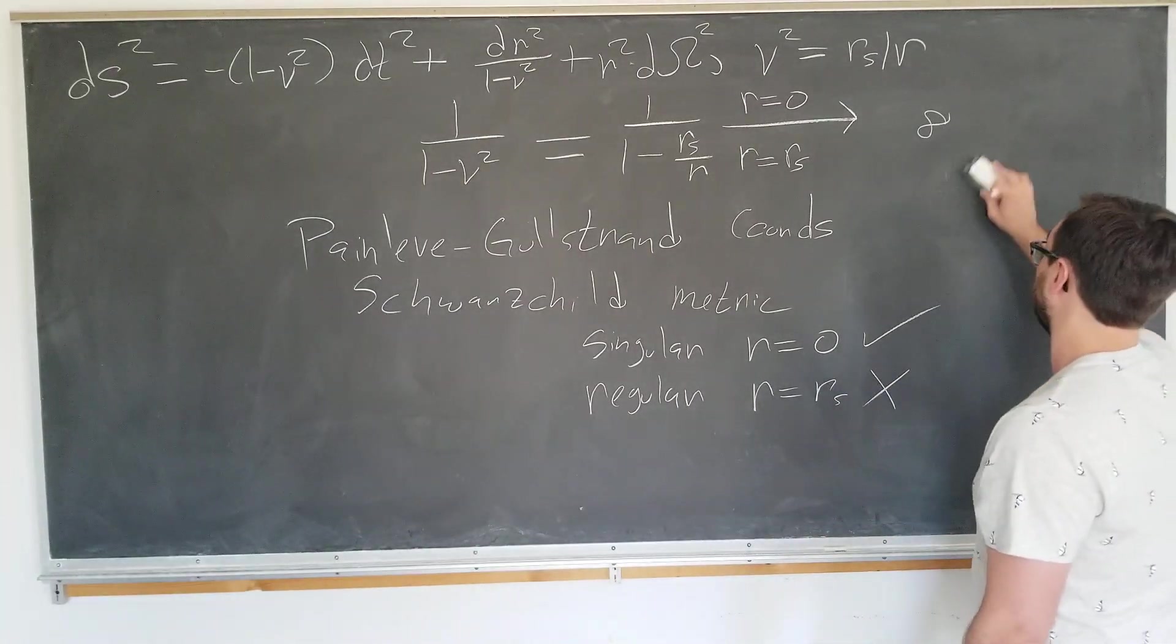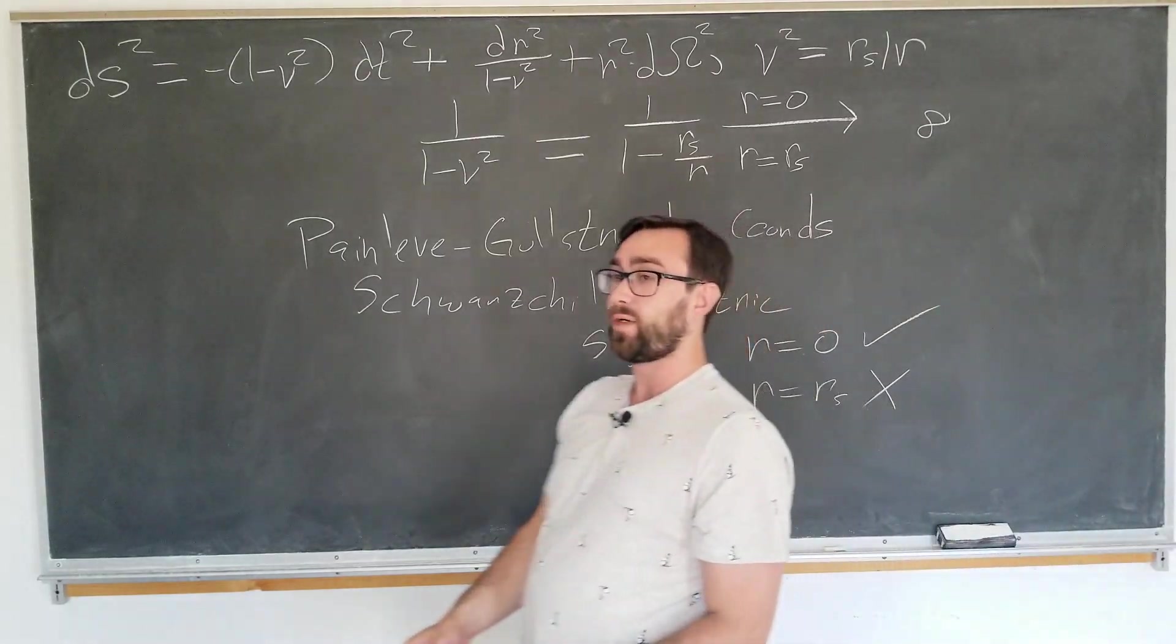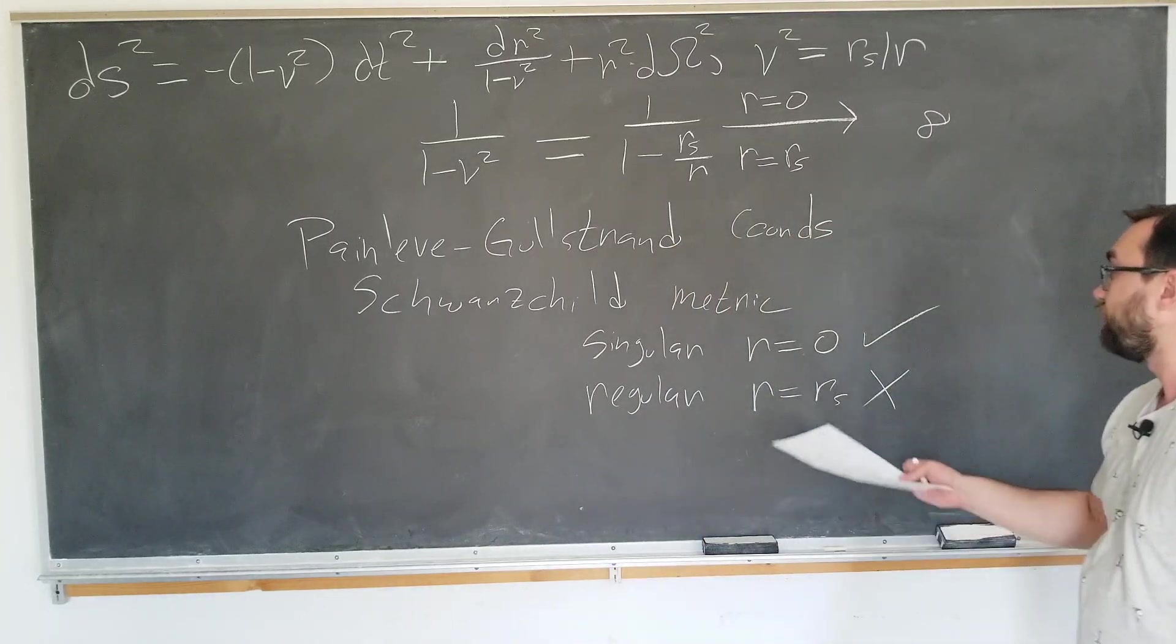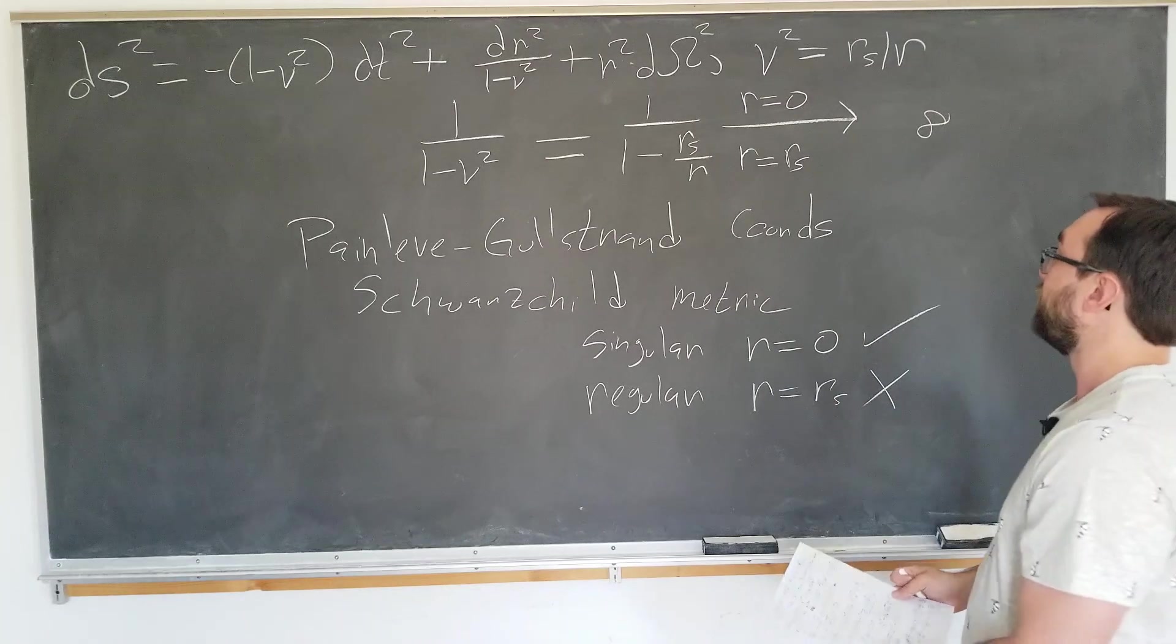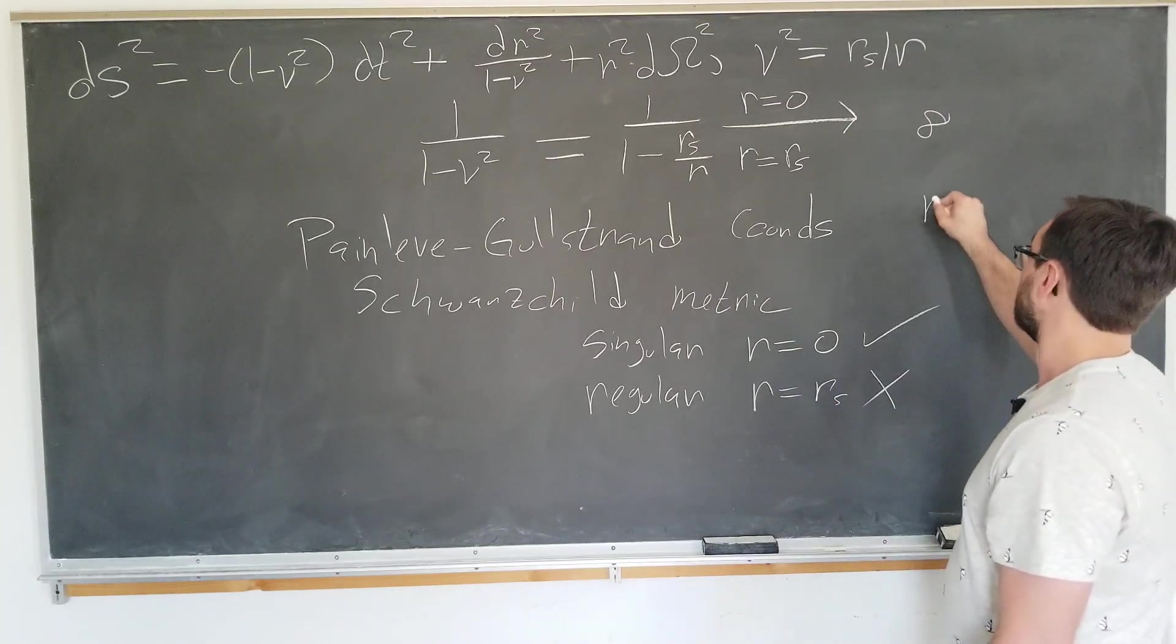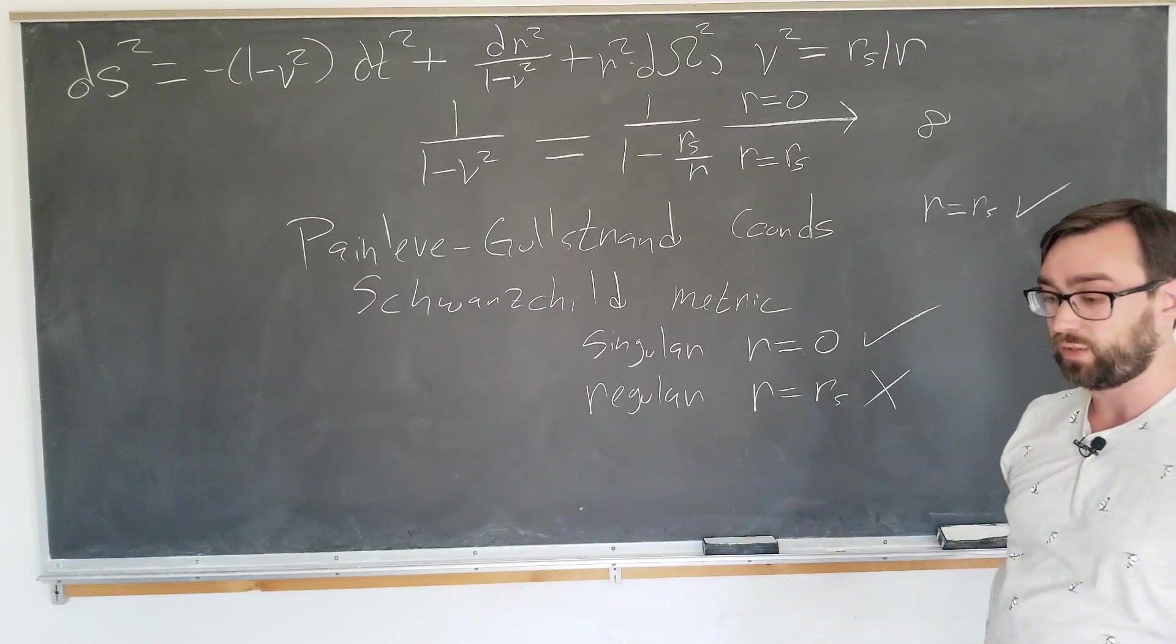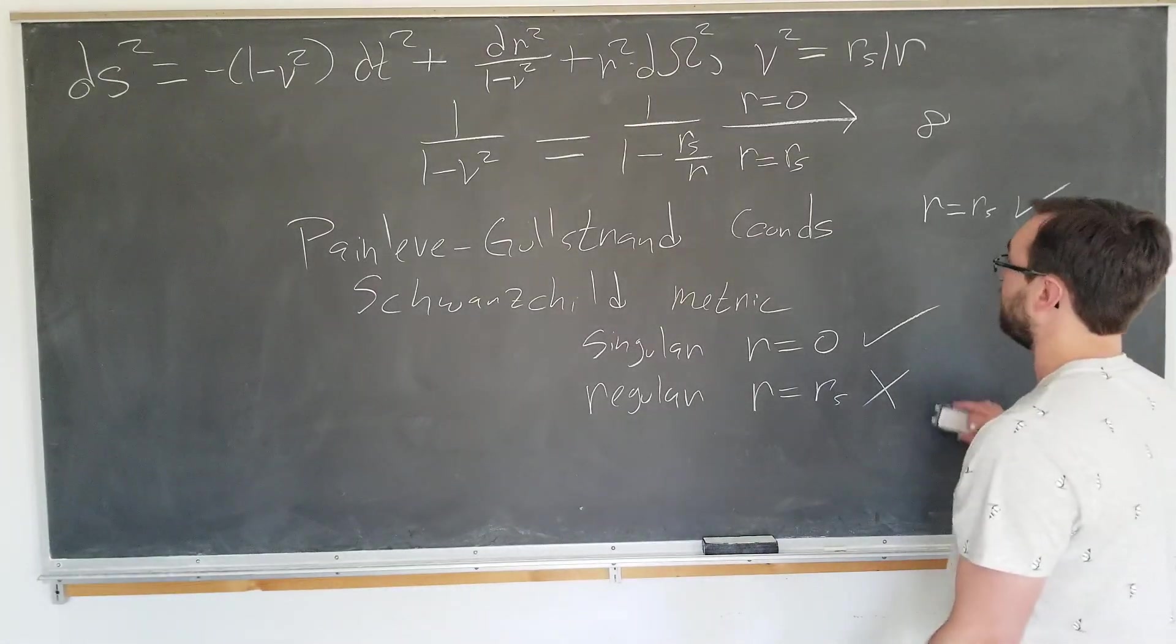You just don't want that. So we aim to find a coordinate transformation that will explicitly show us that it should be singular at r equals 0. But we should be able to substitute r equals rs in and it should be fine. Let's go ahead and write down the coordinate transformation that we're going to use and get started.